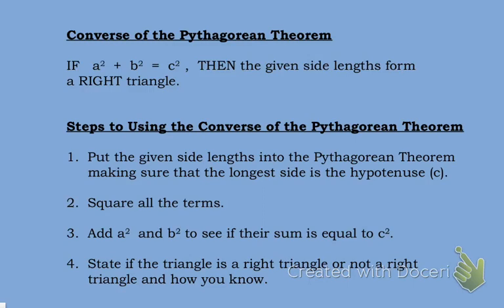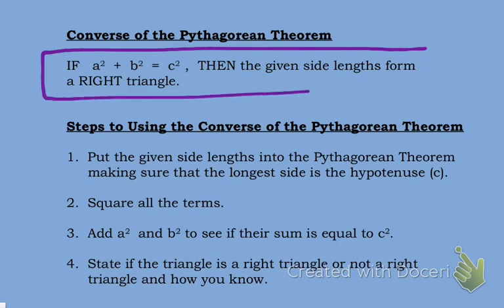So the converse is really an if-then statement about the Pythagorean Theorem that states that if the two legs, a and b, squared and added to one another is equal to the hypotenuse squared, then the given side lengths will indeed form a right triangle. Please jot this if-then statement into your notebook right now, as well as the four steps for using the converse of the Pythagorean Theorem to determine if the dimensions form a right triangle.